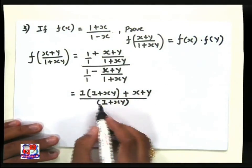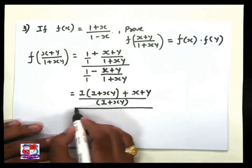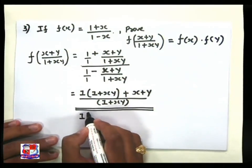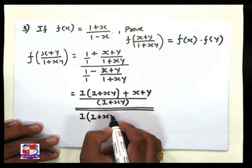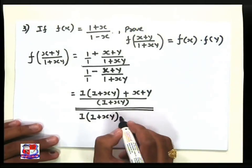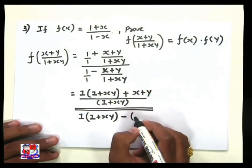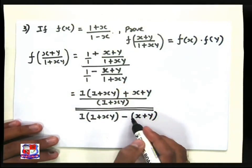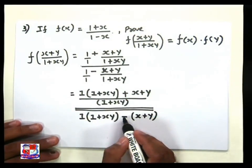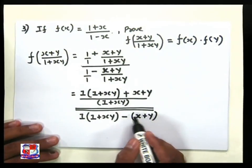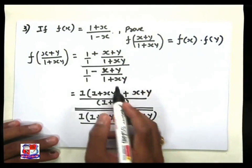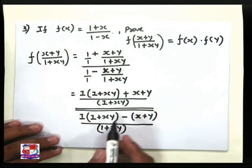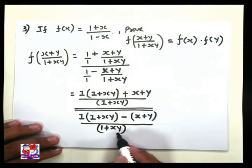Now we simplify this step. For the denominator, LCM is (1 + xy), so (1 + xy) multiplied by 1 gives 1, then plus xy. Take minus sign as it is, then x plus y in bracket — remember this bracket because the minus sign multiplies both terms, so it becomes minus x and minus y. Divide by LCM, that is (1 + xy).